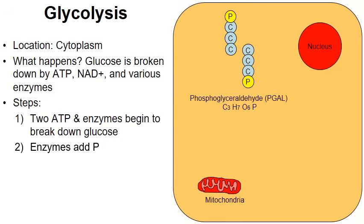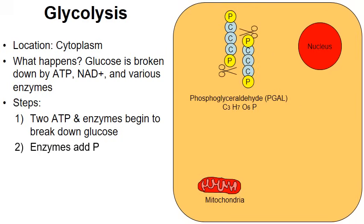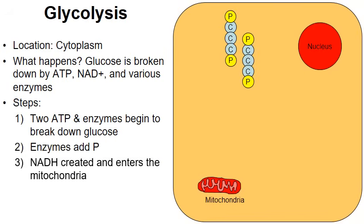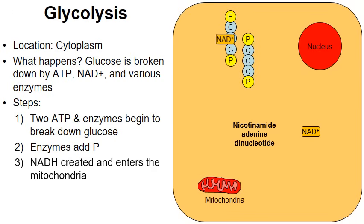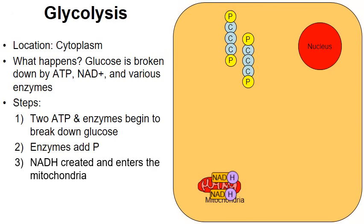Enzymes in the cytoplasm add another phosphate onto each of the PGALs, converting them into another intermediate molecule. Next, molecules of NADH are created. NAD — nicotinamide adenine dinucleotide — with the help of an enzyme, strips off a hydrogen to create NADH. NADH acts as a hydrogen carrier, carrying hydrogen over to the mitochondria. This happens for both NAD molecules. These NADHs will be very important in the electron transport chain.